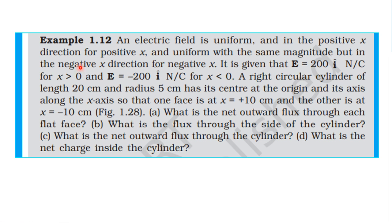From the NCERT textbook, from the topic electric charges and fields, example 1.1. An electric field is uniform and in the positive x direction for positive x axis, and uniform with the same magnitude but in the negative x direction for negative x axis. It is given that E equals 100î N/C for x greater than 0, and E equals minus 100î N/C for x less than 0.